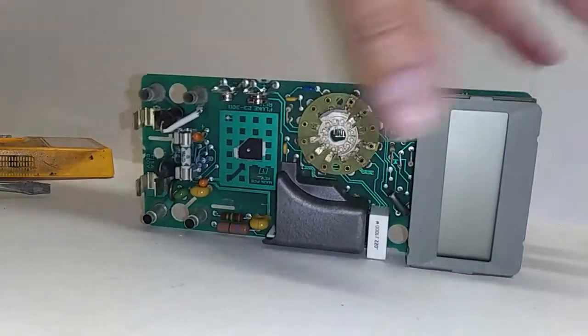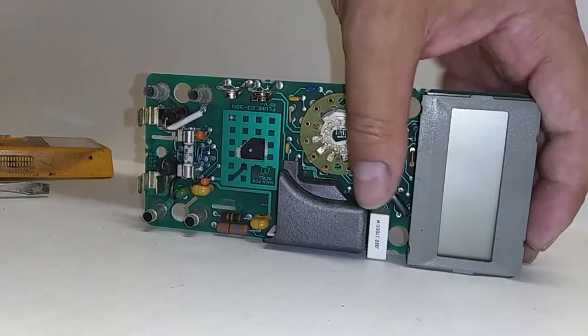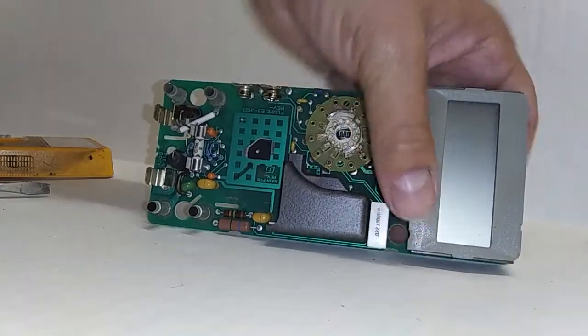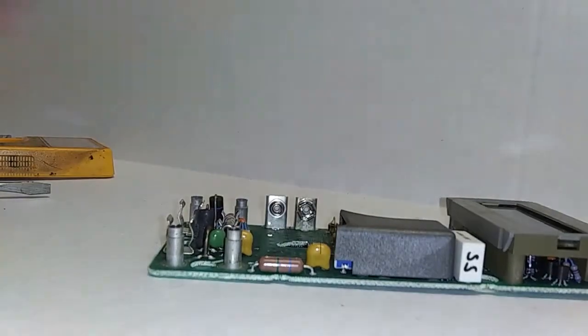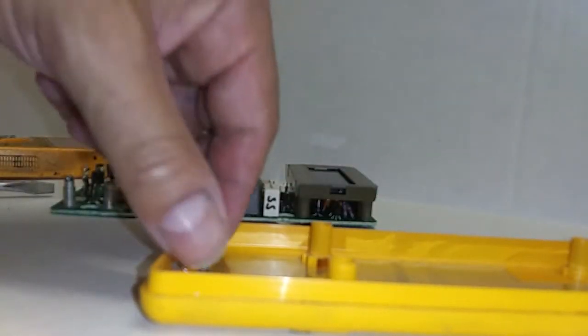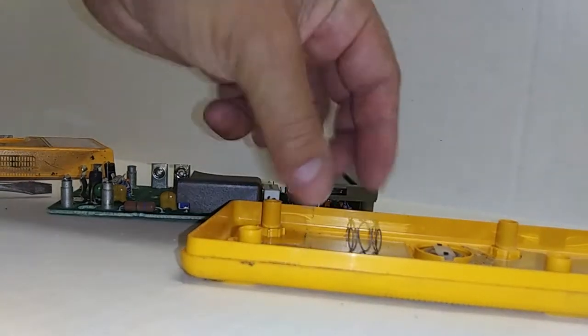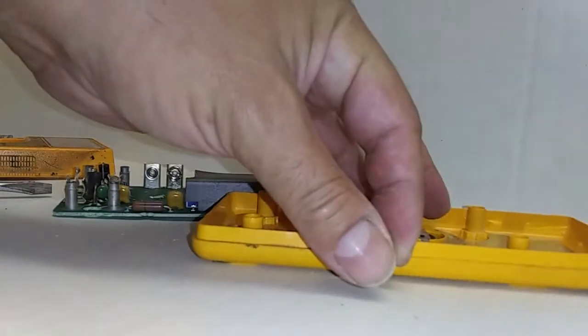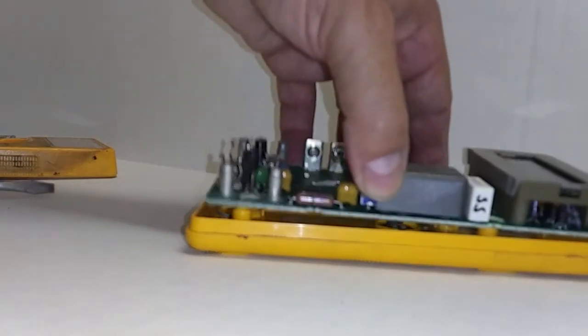So on this one, insert the top section first and then start applying pressure to the bottom section to snap it into place. Now that that's secured we want to screw it back into the bottom case and we've got our spring here. So we're going to put our spring on here like so, and then we're going to insert the main PCB.